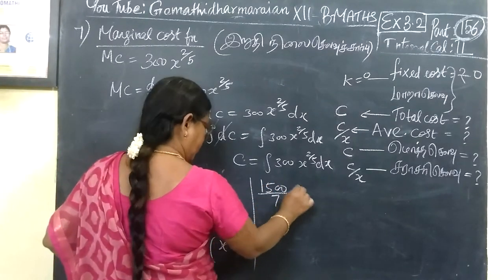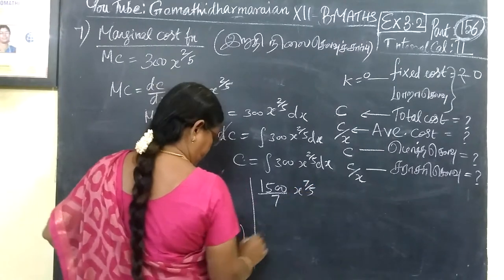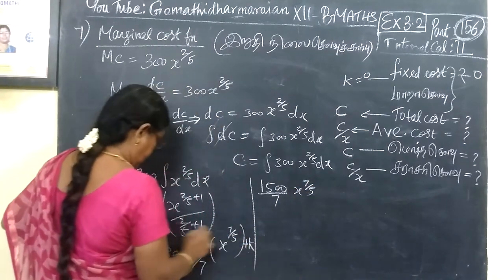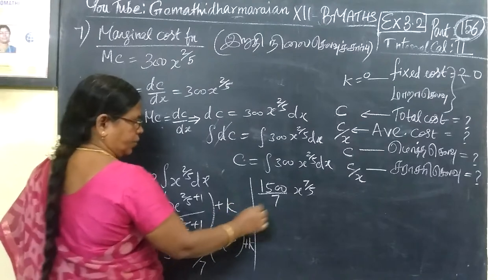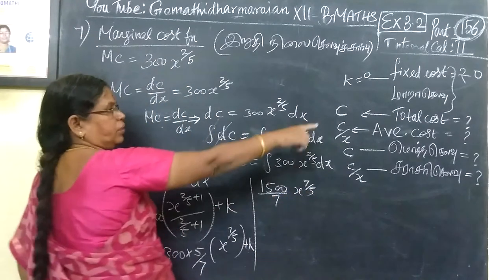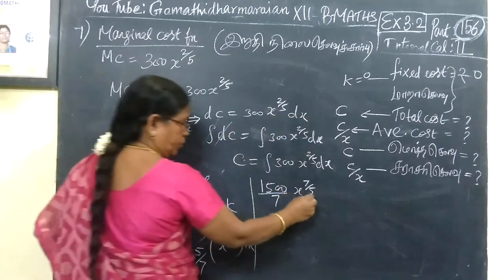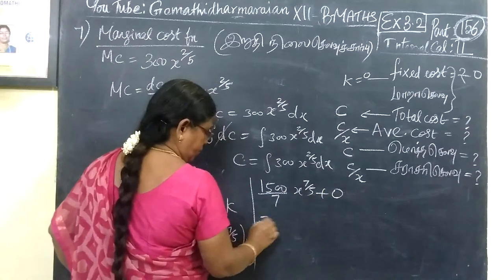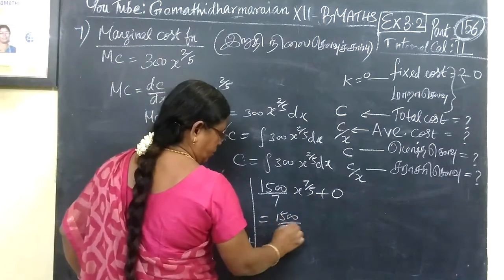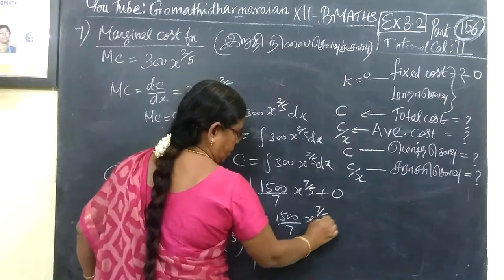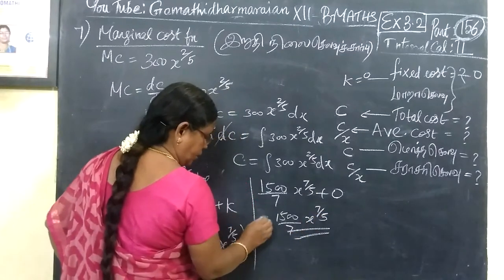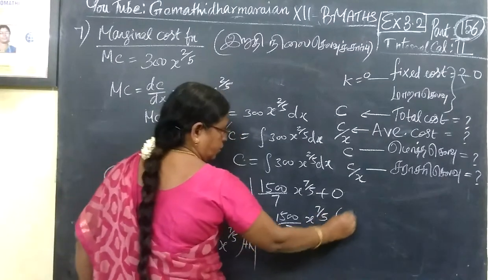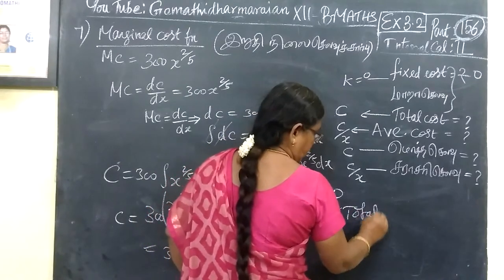This gives us 1500 by 7 x power 7 by 5. Since k is 0, C equals to 1500 by 7 x power 7 by 5. This is the total cost.